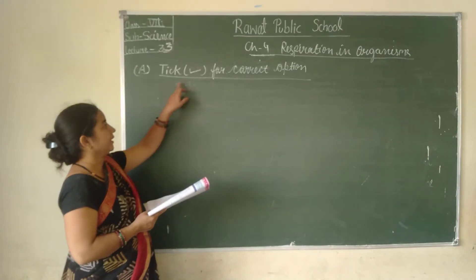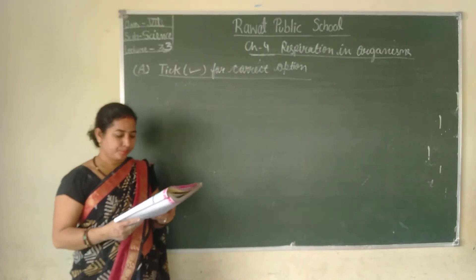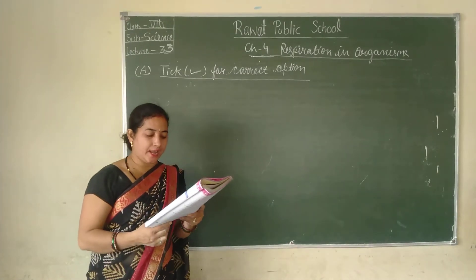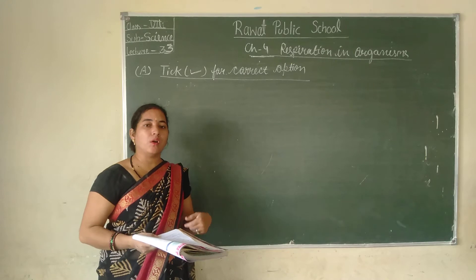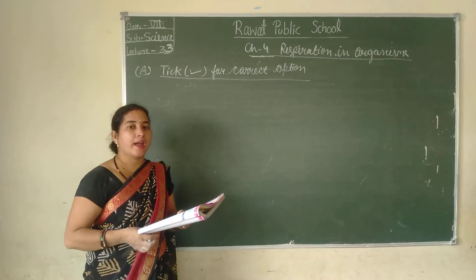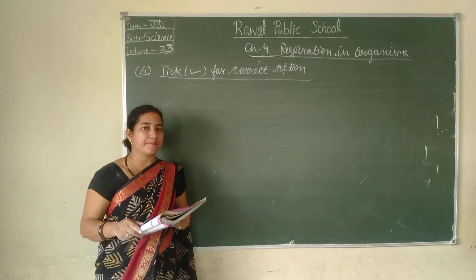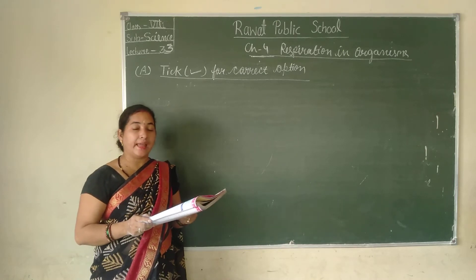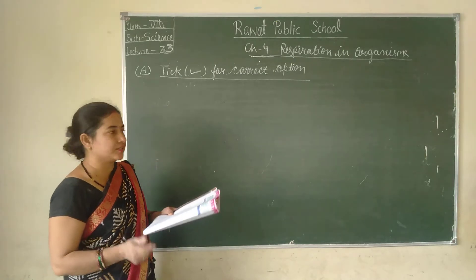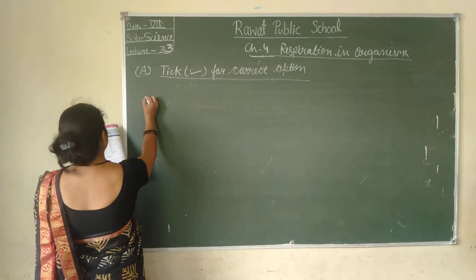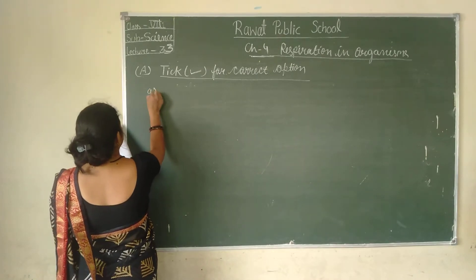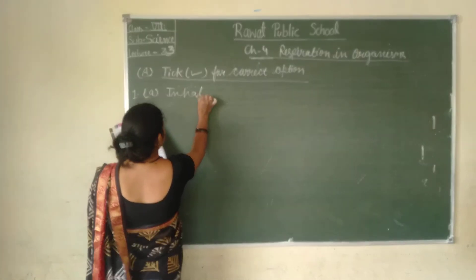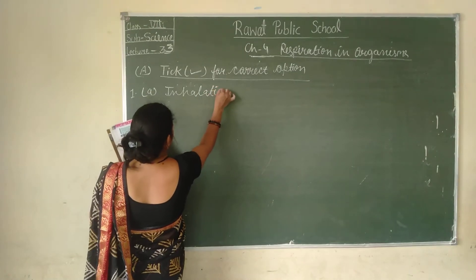First we will discuss the correct options. The first question is: taking in of air is called — what? In respiration there are two types of processes: inhalation and exhalation. So, taking in air is called inhalation. The first answer is inhalation.